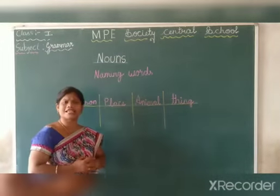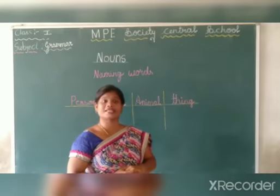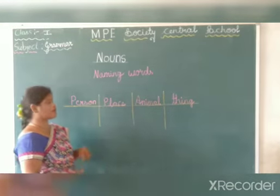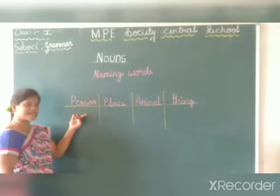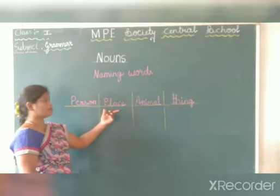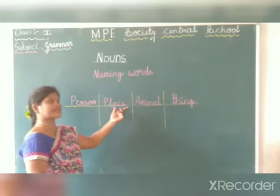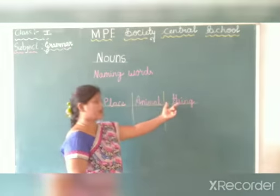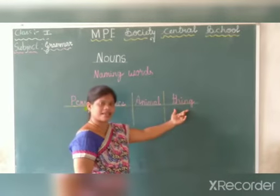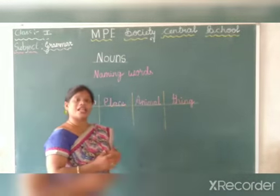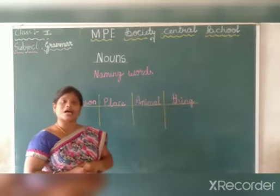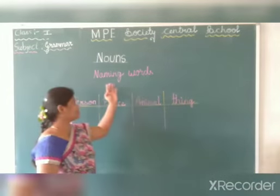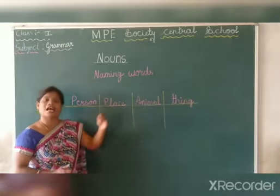What is a noun? A noun is a name of a person, place, animal, and thing. Nouns are also called the naming words.